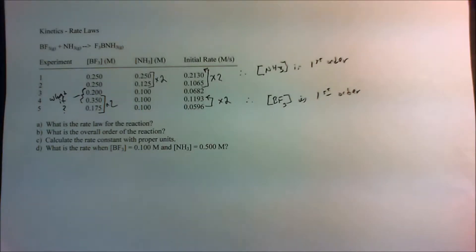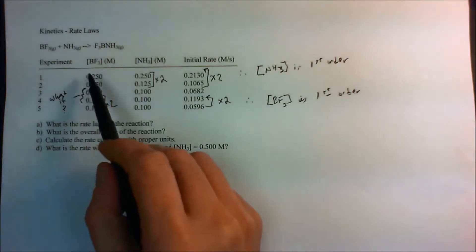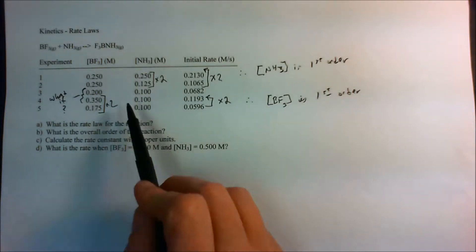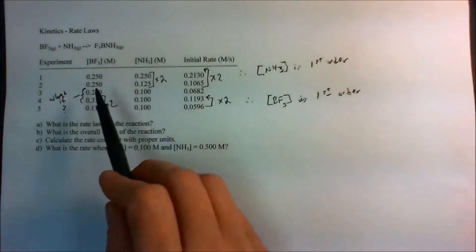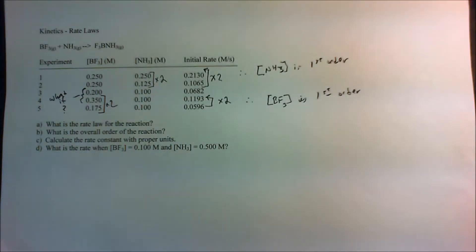Here we have a kinetics rate law problem where we're given a set of experimental data. We're given concentrations of reactants and we're given initial rates of the reaction as they go. I've made some annotations on here and we'll get to that in just a second.